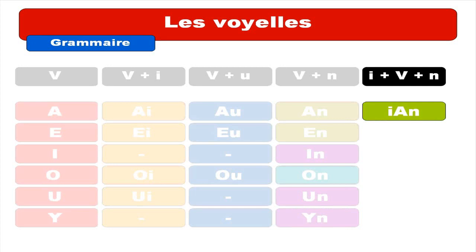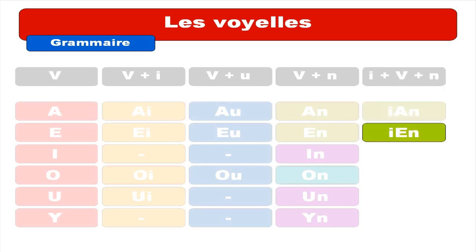Next category: I plus voyelle plus N. In this case, the voyelle is still in capital letter, but it's just to show you that it's there. So it's YAN — the I in front gives you the YA sound. So you get YAN — repeat. YAN. And then YAN — repeat. YAN. Nothing there. And then YON — repeat. YON.